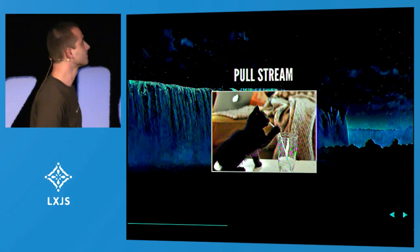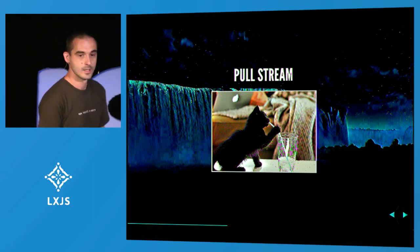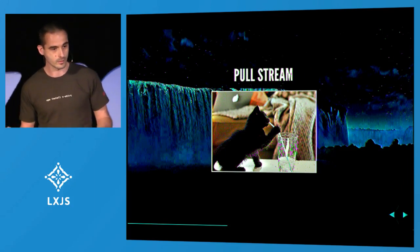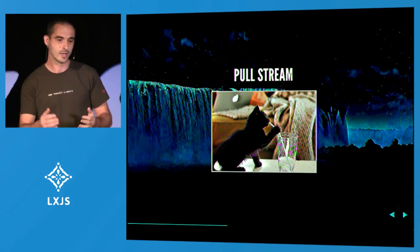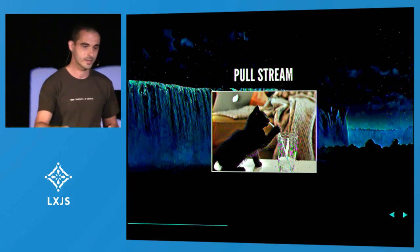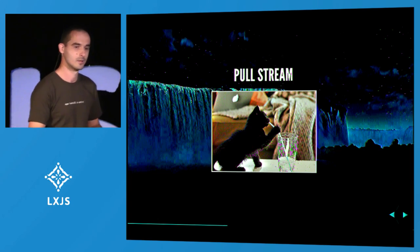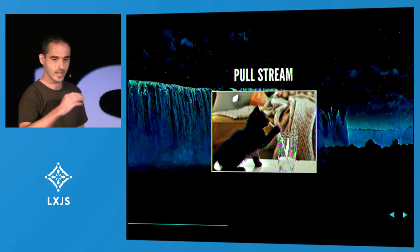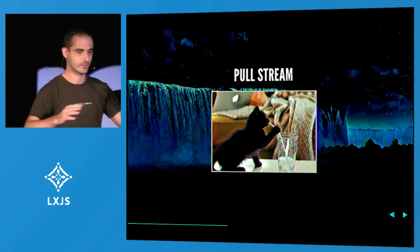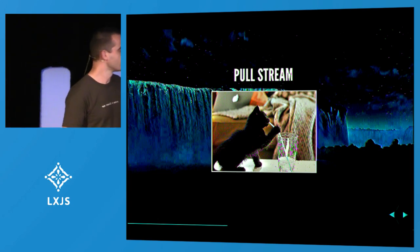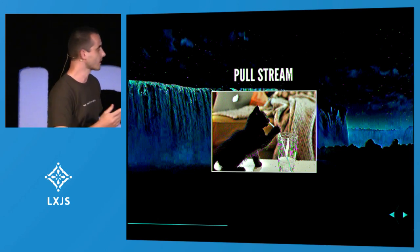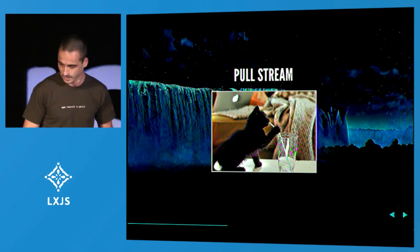This other mode is a pull stream. In this case, you have full control over when you get the next chunk. There's no data just coming at you that you have to handle. It's you who decides when you get the next chunk — whenever you process that chunk, you get the next one.